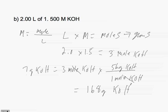Take 168 grams of KOH and, using a 2 liter volumetric flask, add the 168 grams into the volumetric flask, then add water, raising the water level up to the 2 liter mark on the volumetric flask.